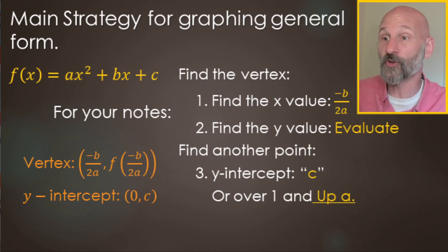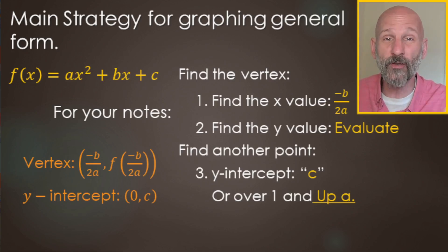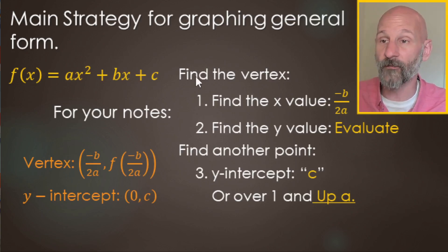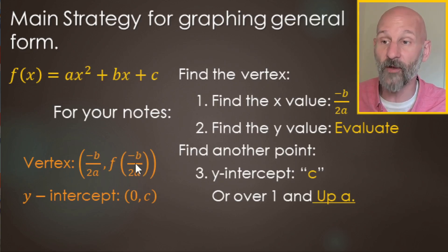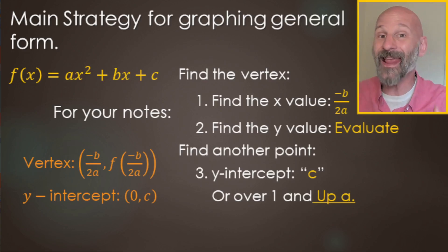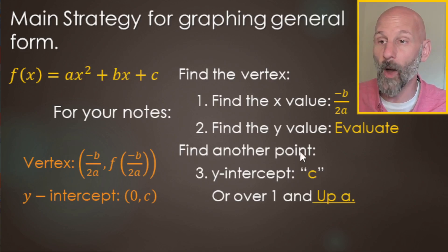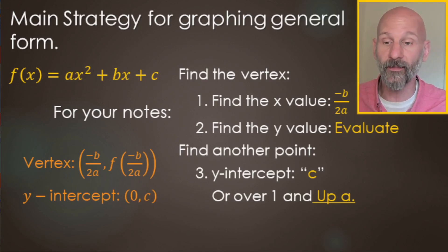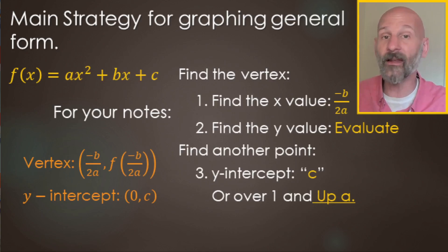For graphing, the main strategy: to find the vertex, we do negative b over 2a to find the x value. Then evaluate the function for that value to get the y value. For another point on your parabola, you can use the y-intercept, which is the value c, or you can use the leading coefficient a — go over one and up a for additional points. We'll go over why that works later in the video.